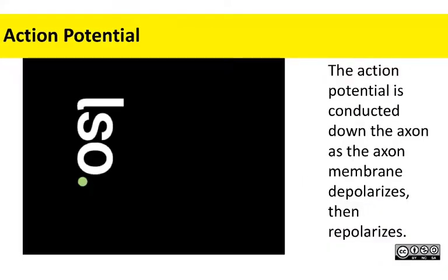In this short video, we see the action potential conducted section by section down the axon as each section of the axon membrane depolarizes and then repolarizes. Once the action potential reaches the axon terminals, that's the first place we have voltage-gated calcium channels. Those open, allowing calcium to flood in. That calcium influx leads to exocytosis of the neurotransmitter. The neurotransmitter diffuses across the synaptic cleft and binds to the receptor, which is a ligand-gated either positive or negative ion channel, causing a graded potential in the post-synaptic cell.